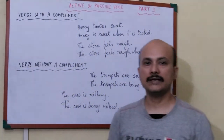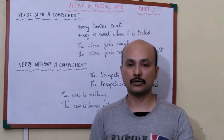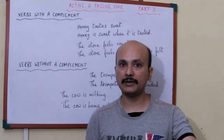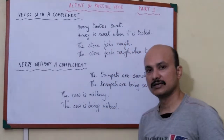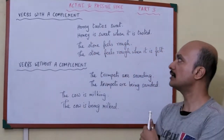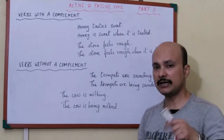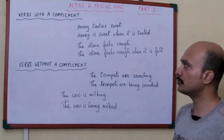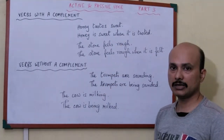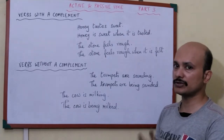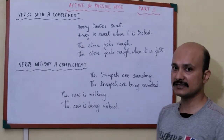The next rule is about verb with a complement and verb without a complement. A complement adds a particular quality — for example, 'honey tastes sweet' adds a complement to the subject describing the taste. 'Sweet' qualifies that particular verb. Now what do we do here? How do we change such sentences?